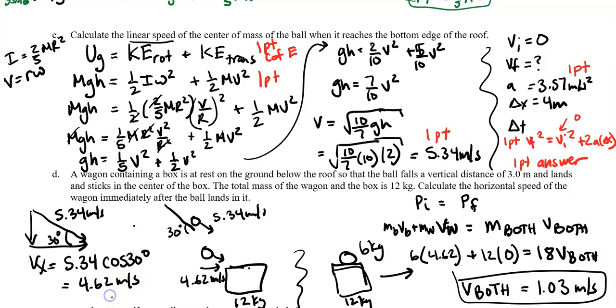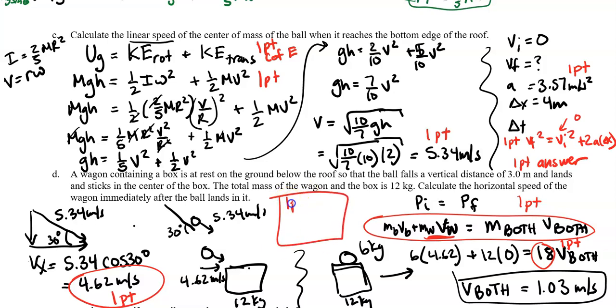Here's the rubric. One point for the velocity in the X direction of 4.62. One point for a correct conservation of momentum statement. One point for using the masses of both of them afterwards. The last point is for correct units on B, C, and D. We used correct units on all of them, so we get one more point. Thanks so much for watching, that was fun.